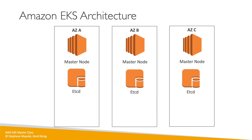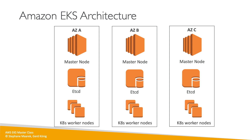Once everything is set up — that's called the control plane — you can create your Kubernetes worker nodes. They can be in auto scaling groups across multiple AZs. When you look at this setup, a lot of things can fail if you were to manage everything yourself. Before EKS, you had to manage everything, and what fails really badly is the master nodes or the etcd cluster. If instances get terminated or you have a failure and don't know how to fix it, you're in trouble.